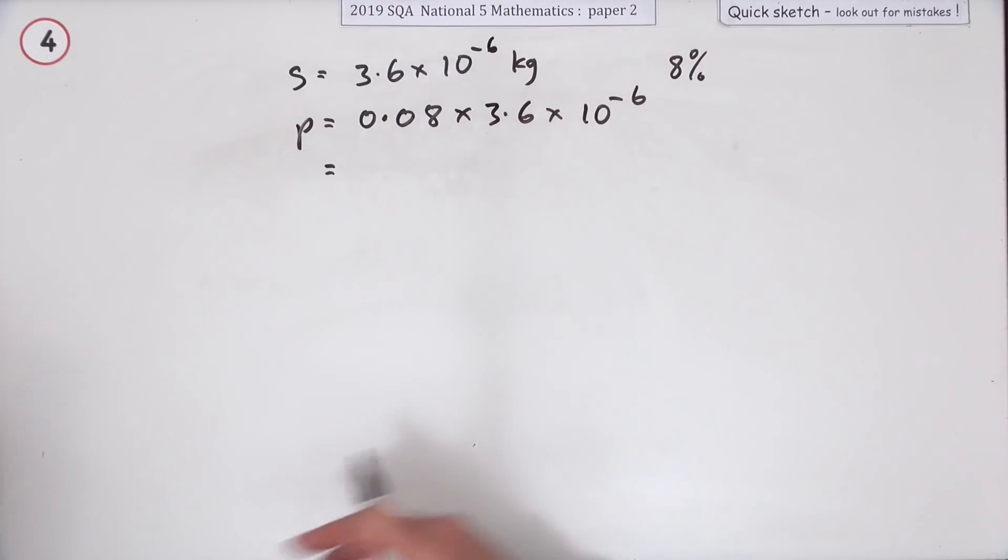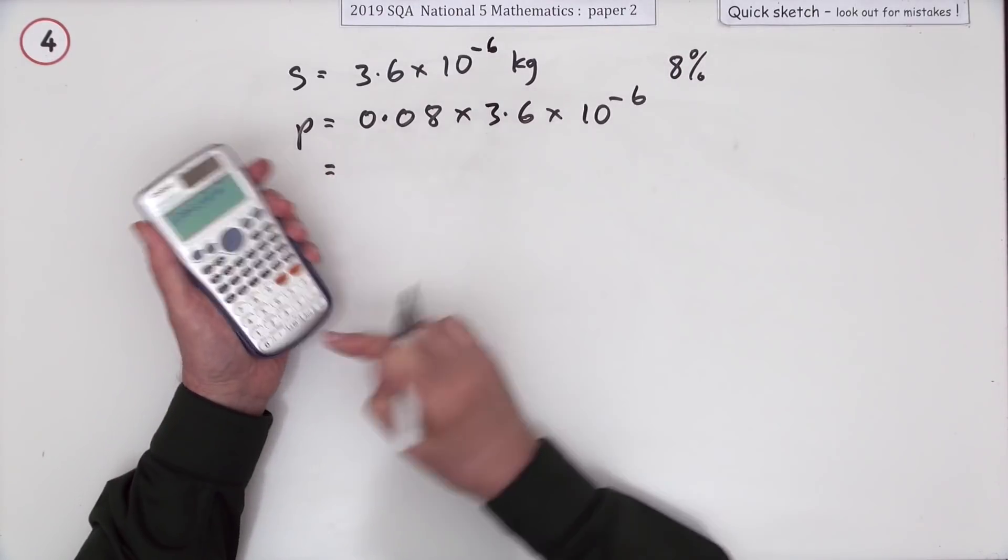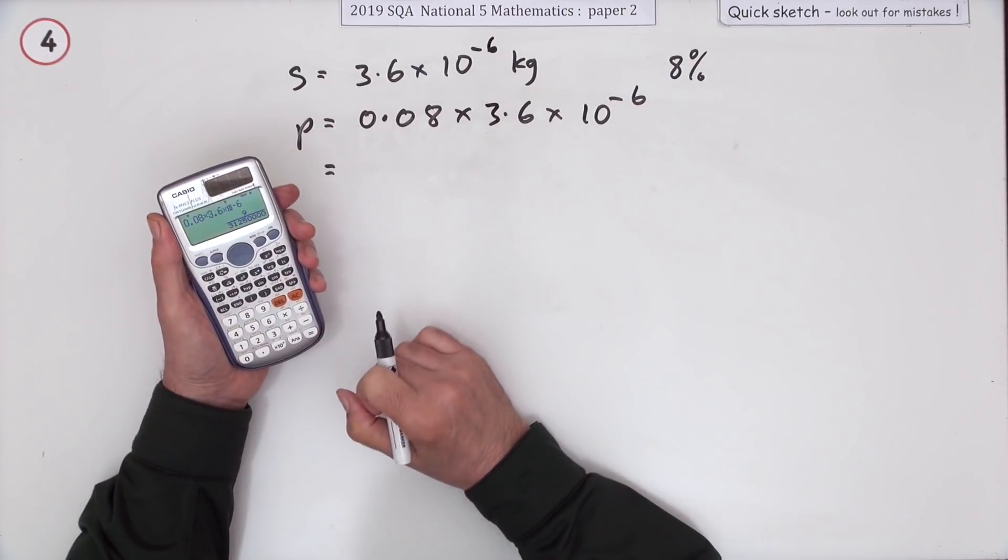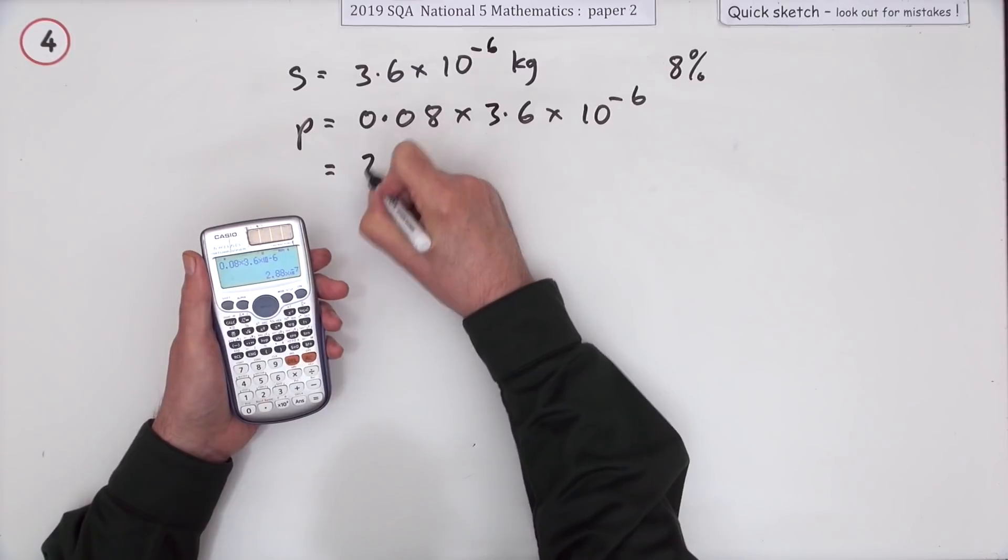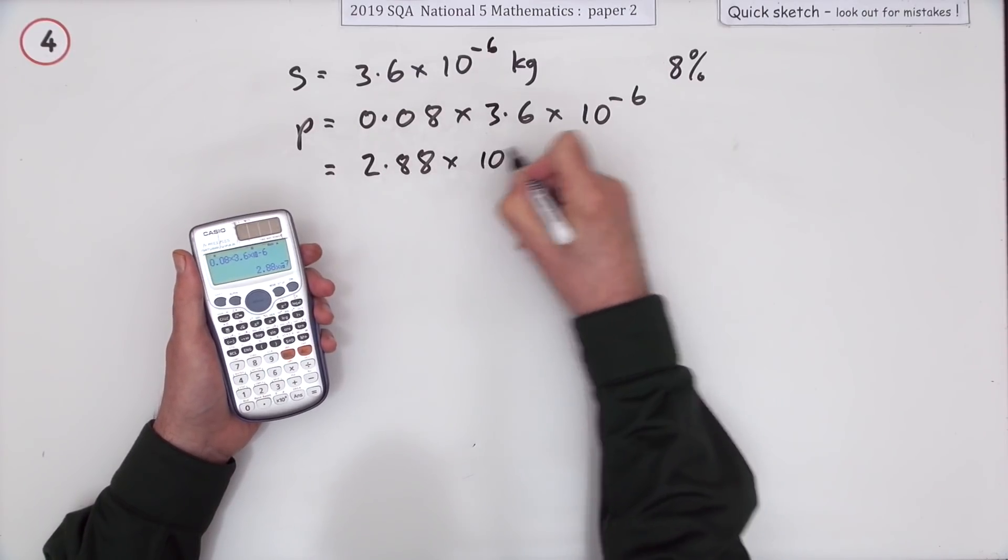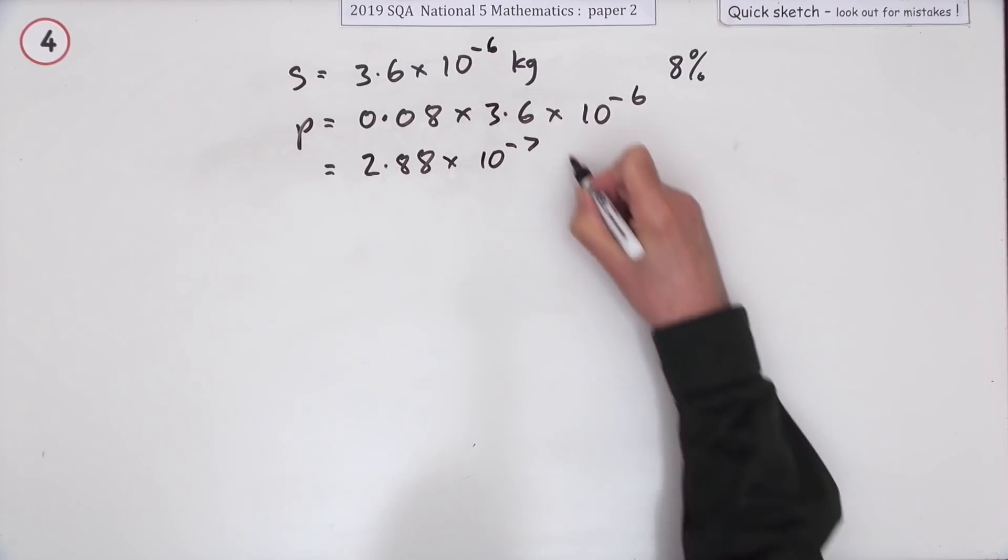You just type that in because there's even a button there that says times 10 to the power. So you just enter that, press equals, and it gives you it back that way: 2.88 times 10 to the power negative 7 kilograms.